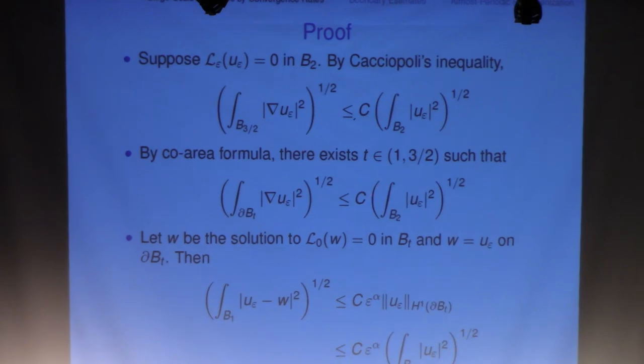The way to argue is that you do this by contradiction. Suppose no such t exists, and then you simply integrate in t, and by the core-area formula, you're going to arrive at an inequality which is in contradiction with the Caccioppoli. So such t always exists.